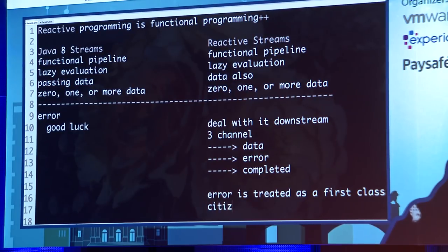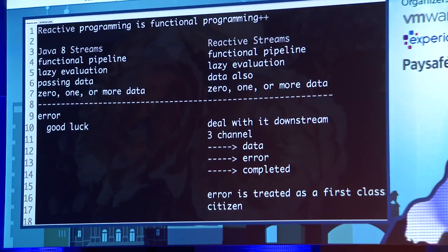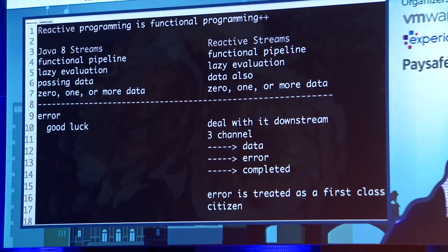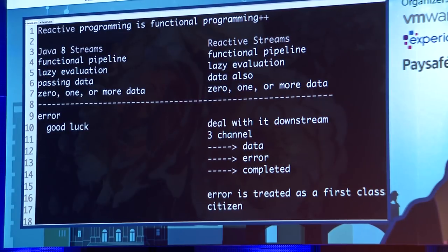There's only one thing I think we've done really badly in our industry: calling exceptions 'exceptions.' We should have called them 'normal.' Because stuff happens — why get excited about it when it does? You treat errors as data and treat them as first-class citizens. When something goes wrong, you close the data channel and the error goes through the error channel.